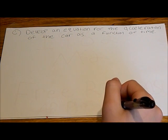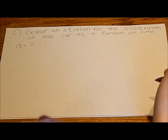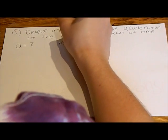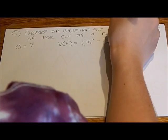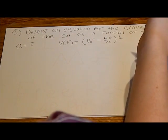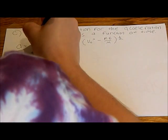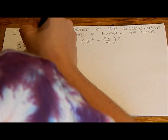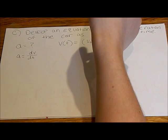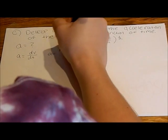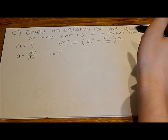Part C says: develop an equation for the acceleration of the car as a function of time. We know acceleration equals the derivative of velocity, so a equals v-prime. The velocity function is v(t) equals v-naught squared minus rt over m to the one-half power, so we just need to take the derivative of that function to find acceleration.